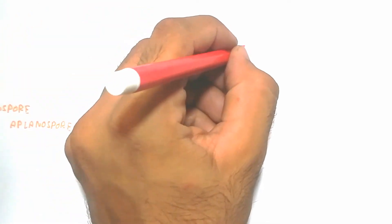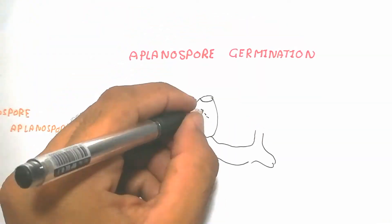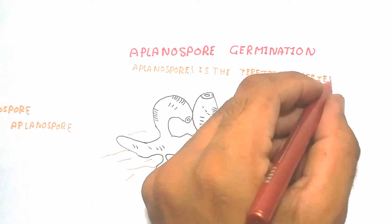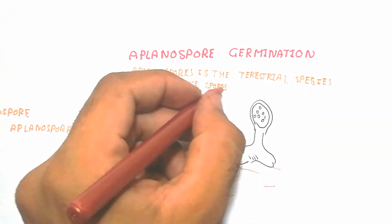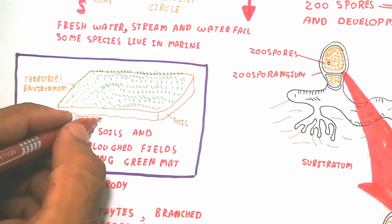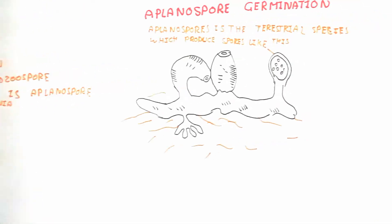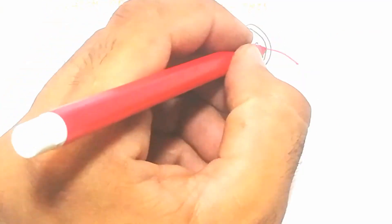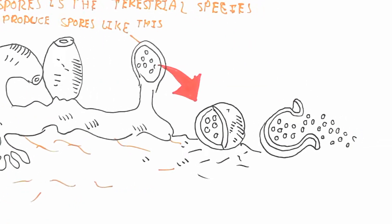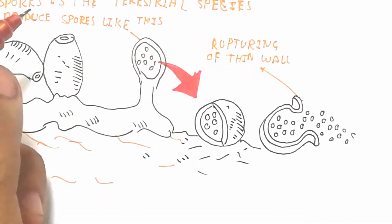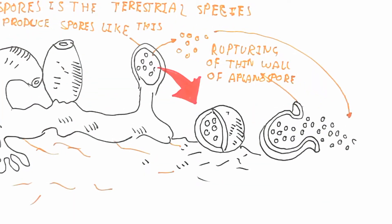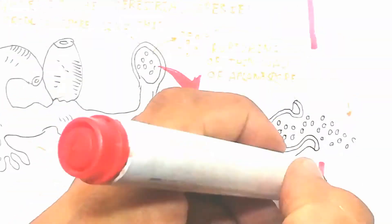The aplanospore is produced by terrestrial species. The zoospore is attached to a lateral or erect filament, which is modified to produce the aplanosporangium. Rupturing of the thin wall of the aplanosporangium releases spores that fall onto the substratum and grow into a new Vaucheria body.